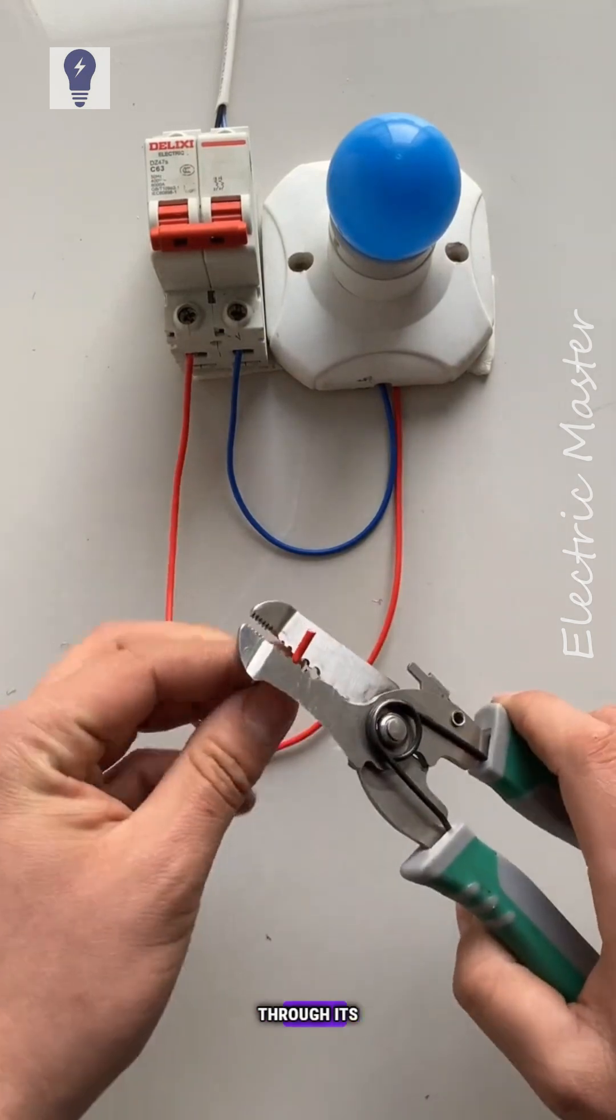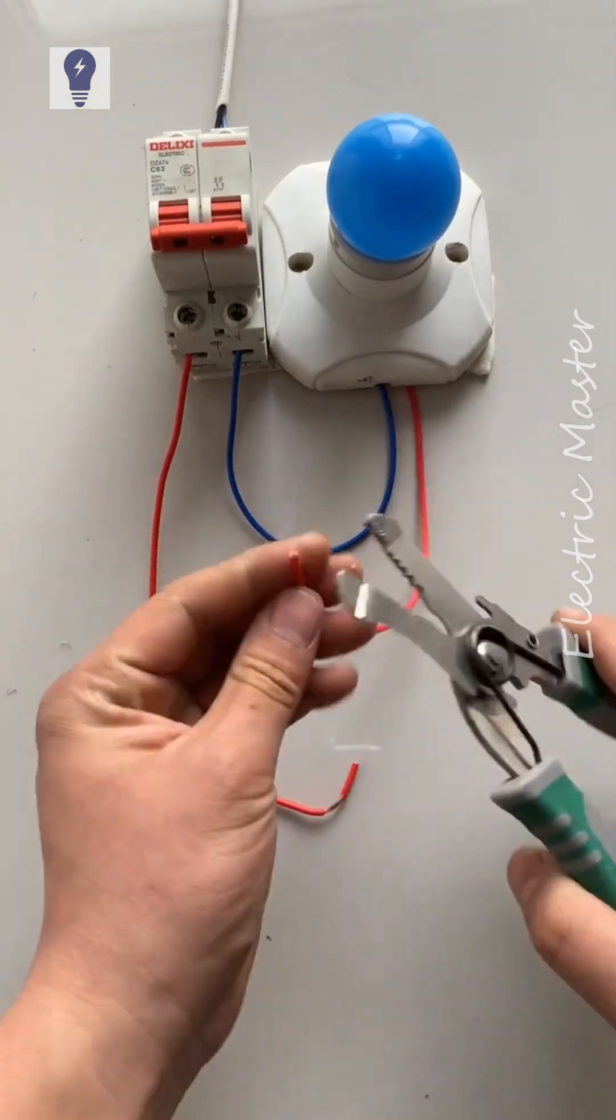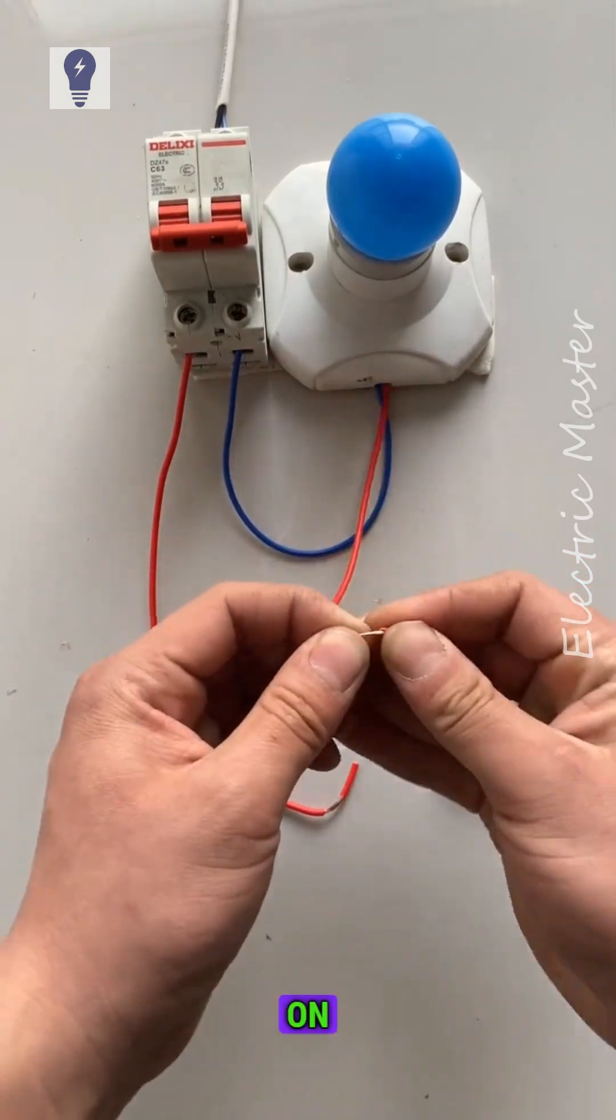Cut the live wire to control through its section. This controls the lamp's on and off states.